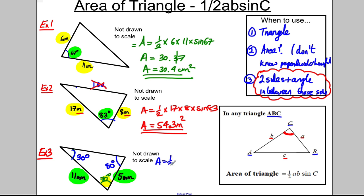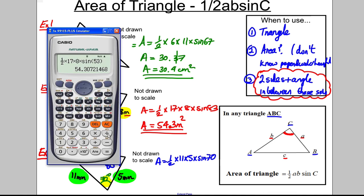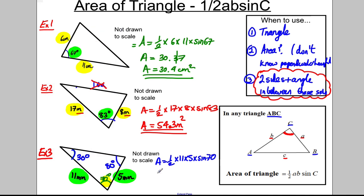The area would be a half multiplied by 11 multiplied by 5 multiplied by sine 70. On the calculator: one half multiplied by 11 multiplied by 5 multiplied by sine 70, close bracket, equals 25.8. So area equals 25.8 millimeters squared. And we're done for this video.